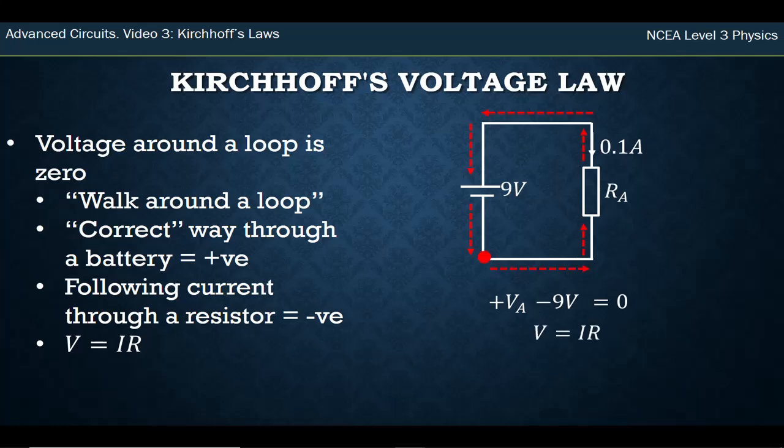We can do our same substitution for our unknown voltage, put IR in there, and we get this. We can add 9 volts to both sides and we get the same place we were before. Divide by 0.1, we get exactly the same answer. So it doesn't matter which way you choose as long as you follow the rules.